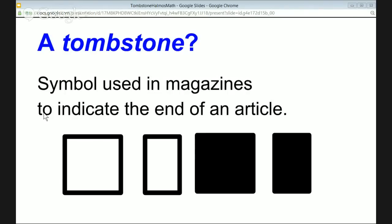Now this symbol was originally used in magazines and newspapers to indicate the end of an article. So you would finish the article and you would have this little tombstone at the end. So hang on — what do magazines and newspapers have to do with mathematics? How did the tombstone get from newspapers into calculus textbooks?